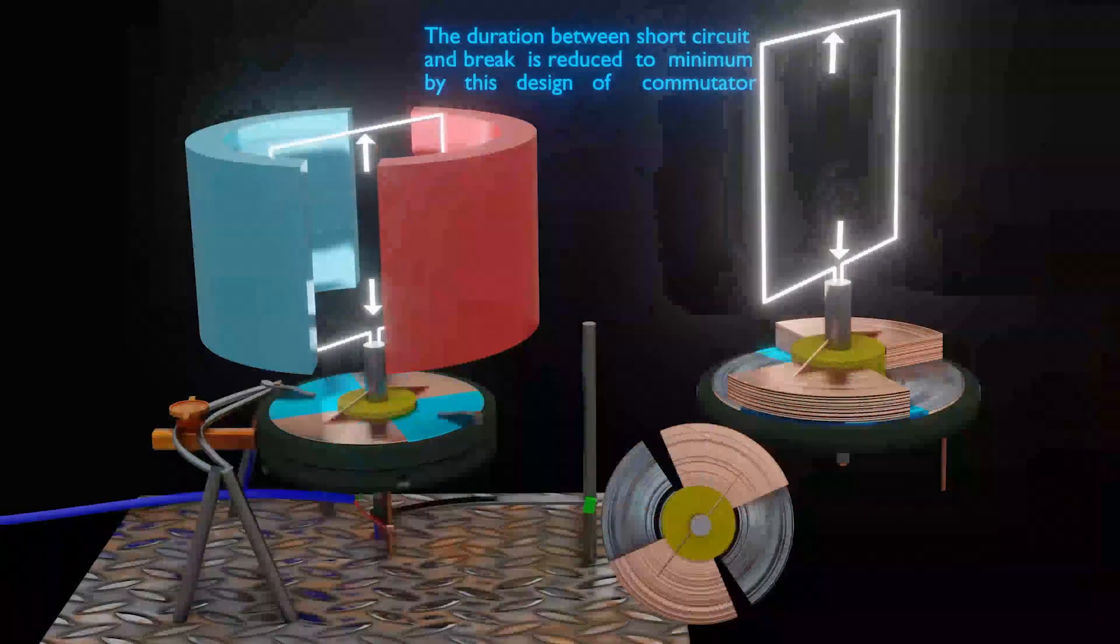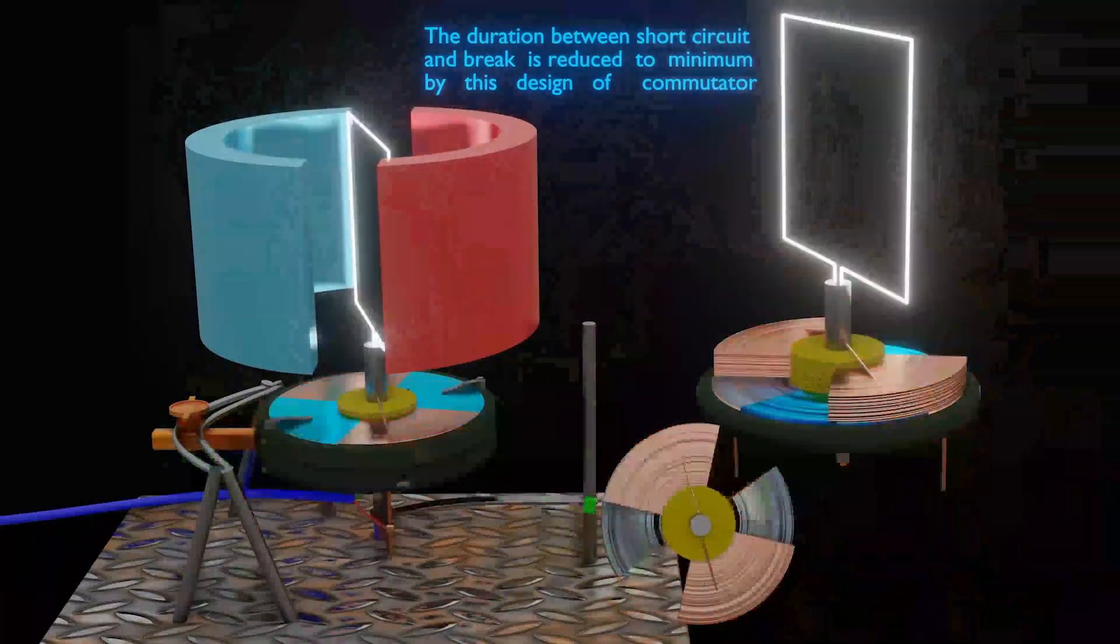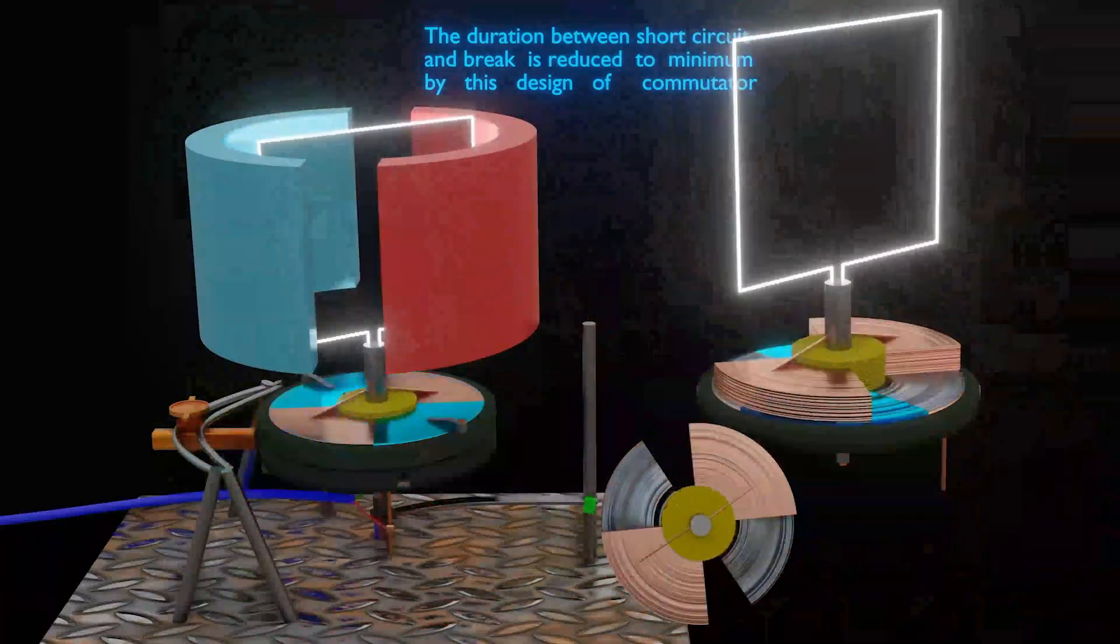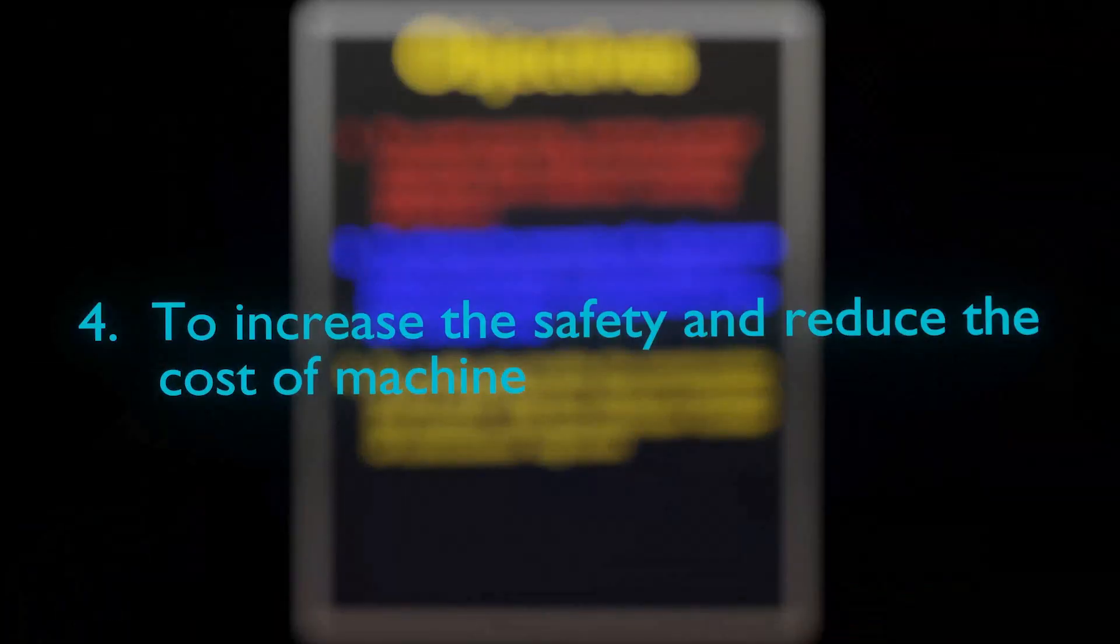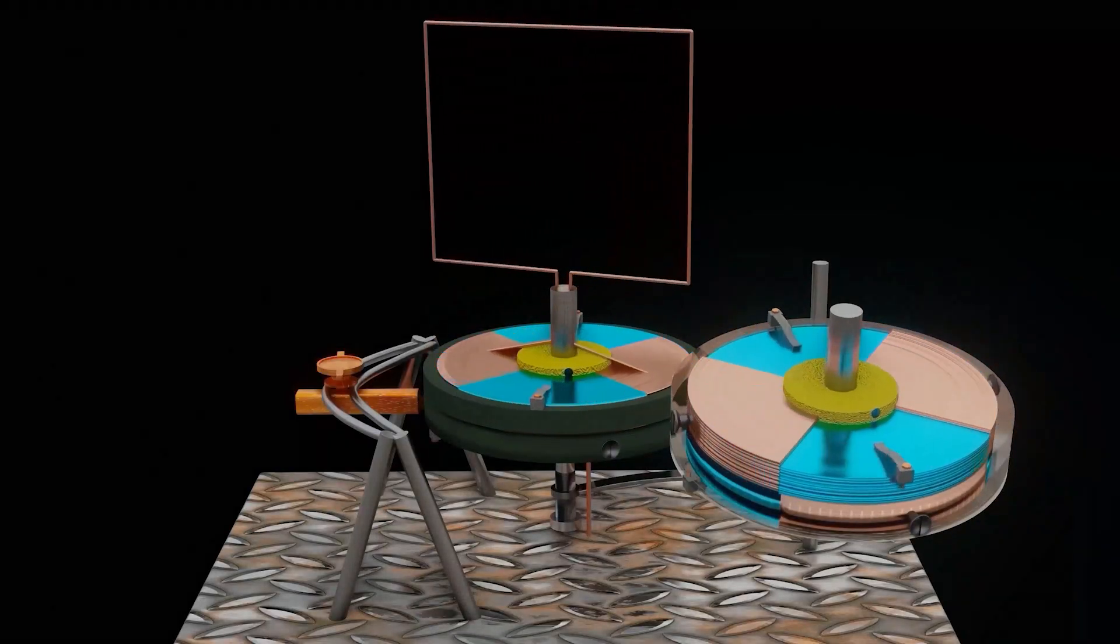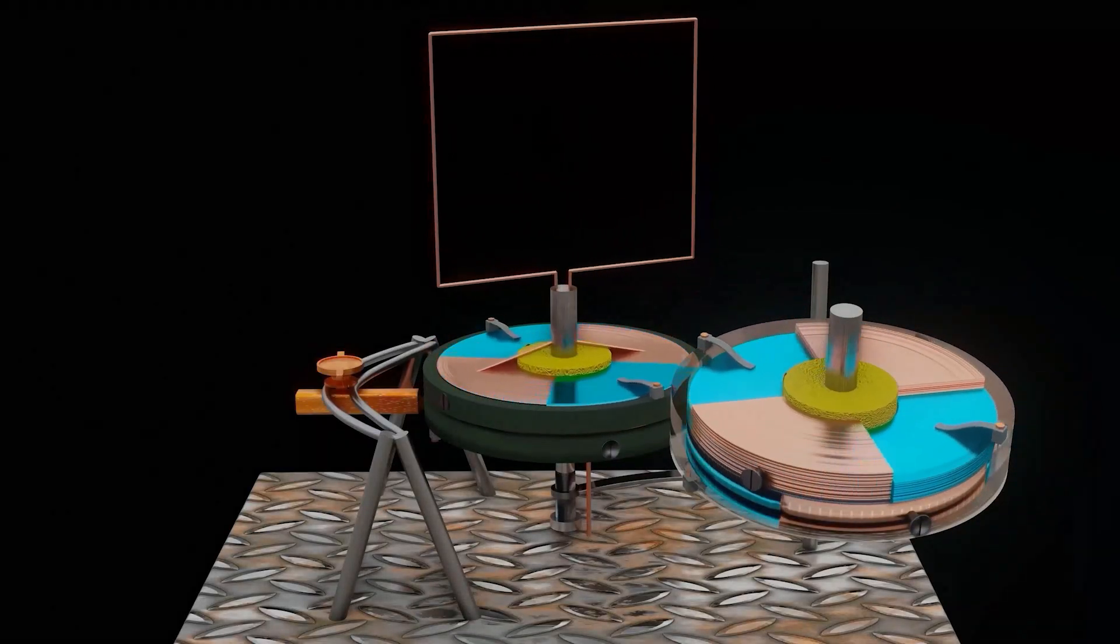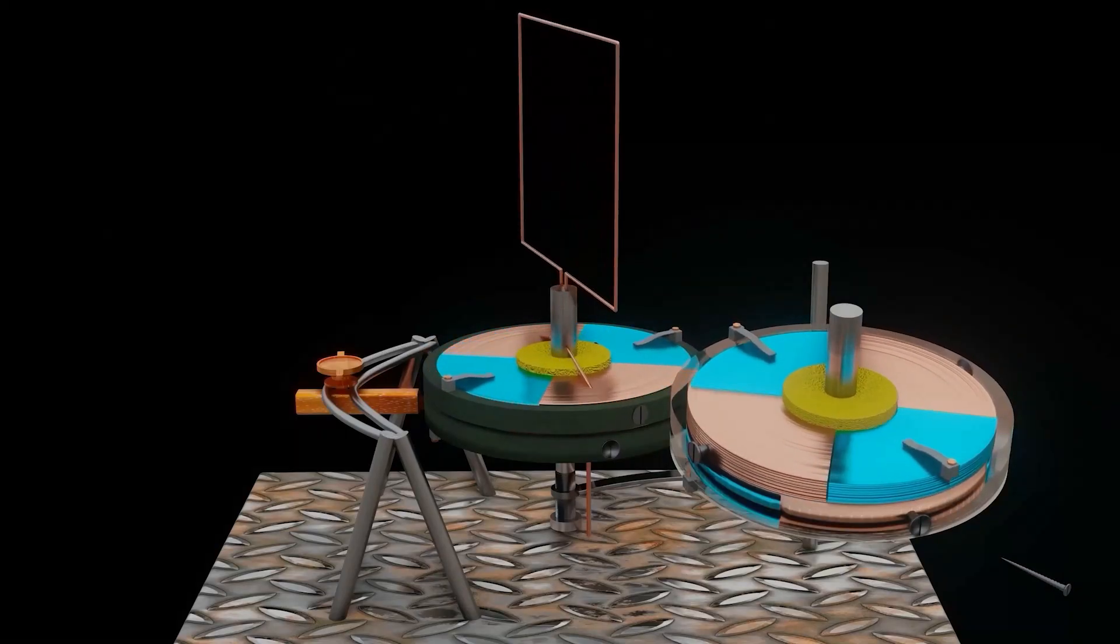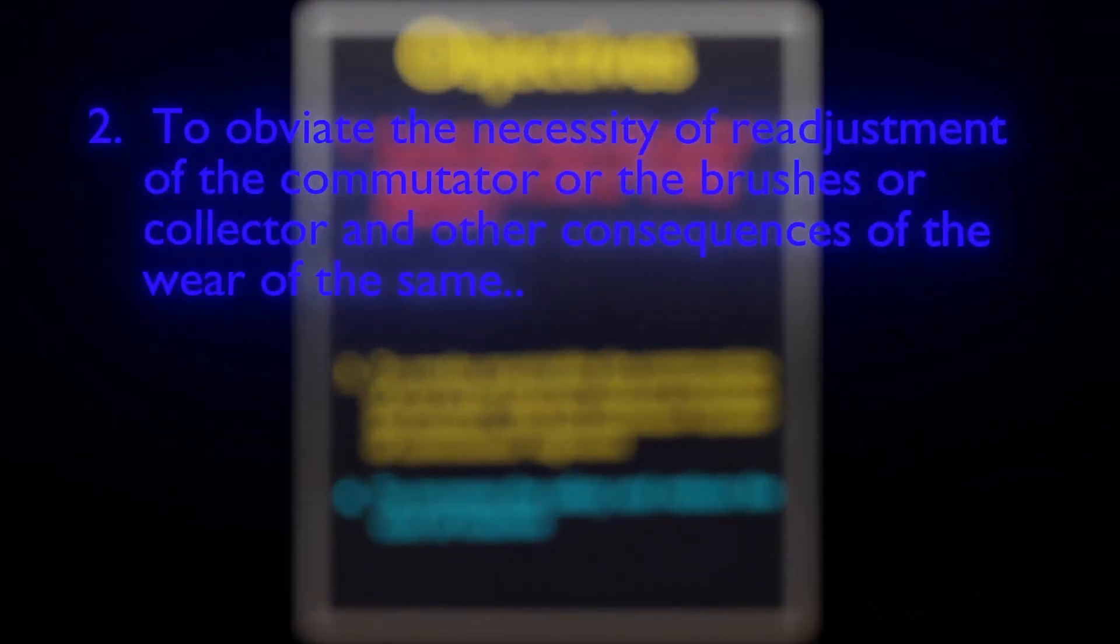Now, lessening the duration of the short circuit increases the efficiency of the machine, because now there is almost a continuous flow of current through the coil. So Tesla's fourth objective has been fulfilled. We can also see that the small spring pushes the insulating segment down as they wear, and the metal segment can be easily moved just by loosening one screw. So Tesla's second objective has been fulfilled.